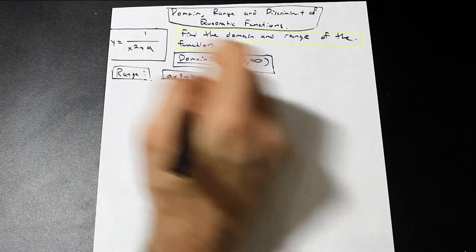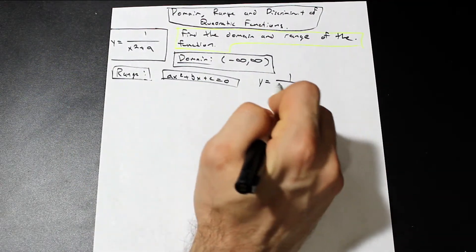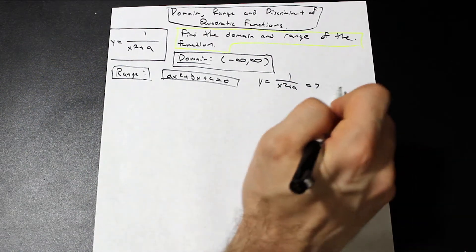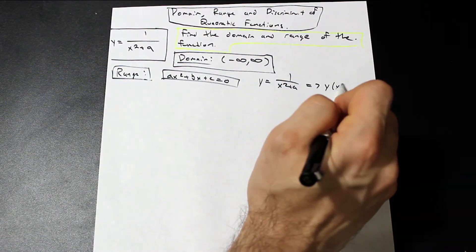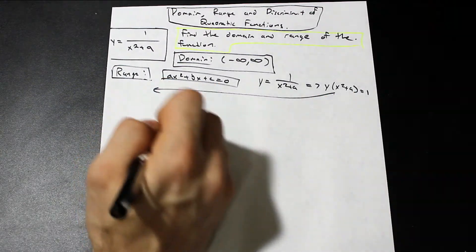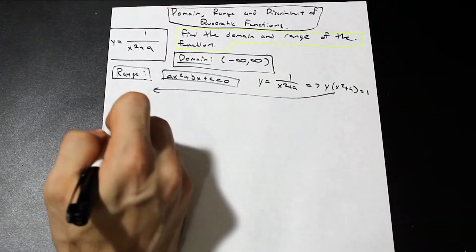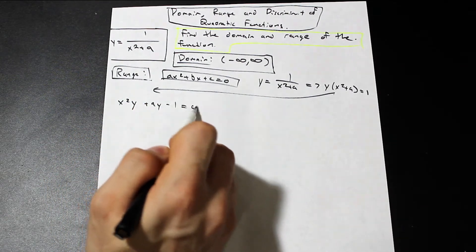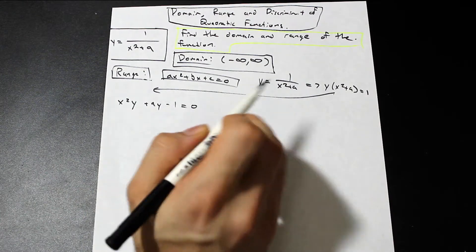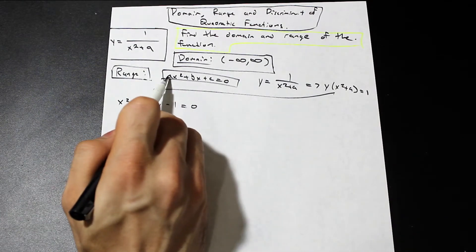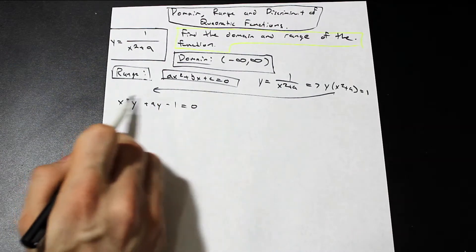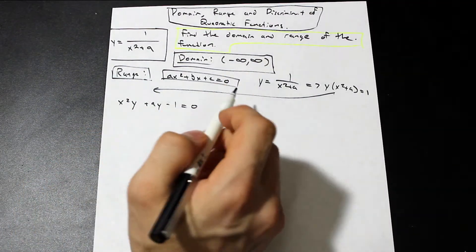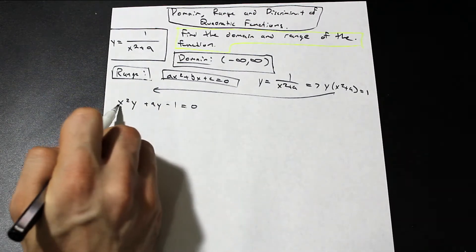What we can do when we have a function like this is model it in the form ax squared plus bx plus c equals zero — the quadratic form. When we model it in the quadratic form, we can plug it into the discriminant and find the range from that, which is quite an interesting trick. So we have y equals one over x squared plus nine. If we multiply both sides by x squared plus nine, we get y times (x squared plus nine) equals one. If we expand that out, we have x squared·y plus 9y minus 1 equals zero. Looking at the coefficients: our a value is y, our b is zero, and our c is nine y minus one.